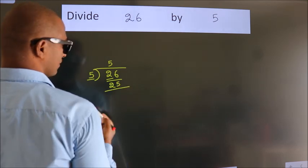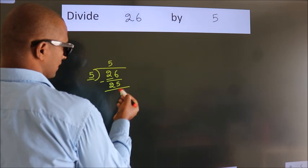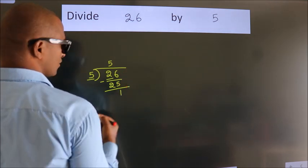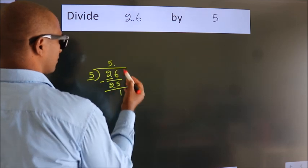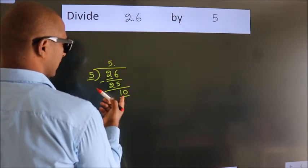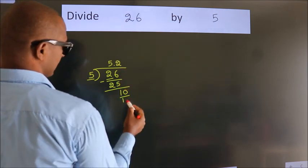Now we should subtract. We get 1. After this, no more numbers to bring down, so what we do is put a dot and take 0, making 10. When do we get 10 in the 5 table? 5 twos equal 10.